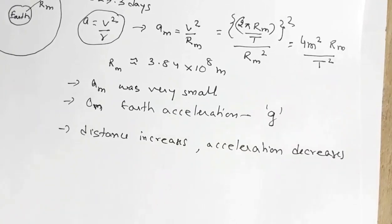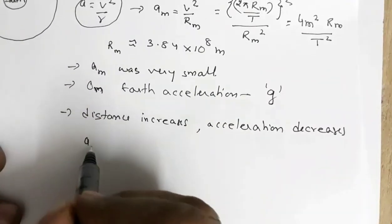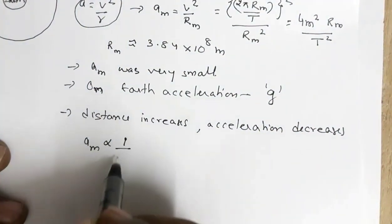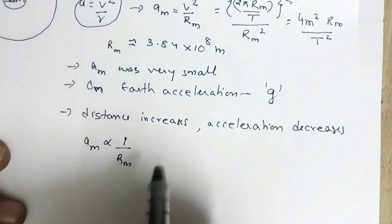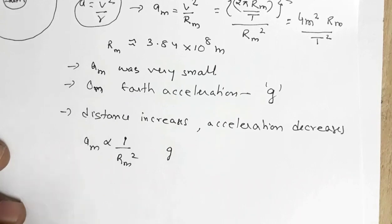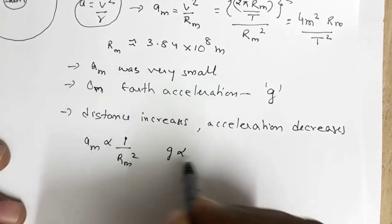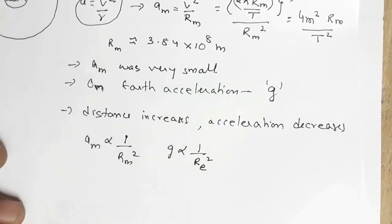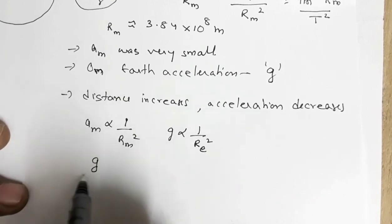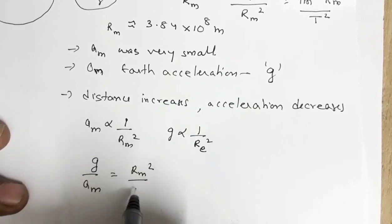If distance increases, acceleration decreases, and therefore force also decreases. Newton proposed that the acceleration of the moon is inversely proportional to rm², the square of the radius of the moon's circular path, and the acceleration due to gravity on Earth's surface is inversely proportional to re², the square of Earth's radius. So we can write: g / am = rm² / re².